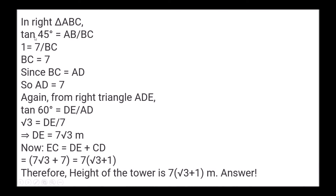In right triangle with angle 45°: tan 45° = AB/BC, so 1 = 7/BC, giving BC = 7 = AD. In right triangle ADE: tan 60° = DE/AD, so √3 = DE/7, giving DE = 7√3 meters. Therefore EC = DE + CD = 7√3 + 7 = 7(√3 + 1) meters. This is the height of the tower.